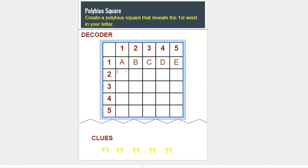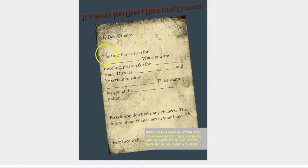And the word we're going to be encoding is a word that would have been found in this letter. It says the time has arrived for blank, and the word I'd like to hide within my Polybius Square is the word Exodus.